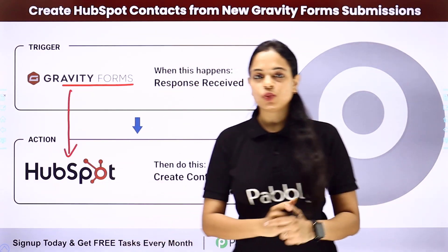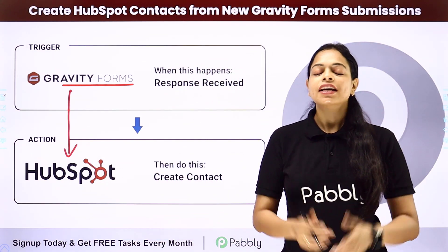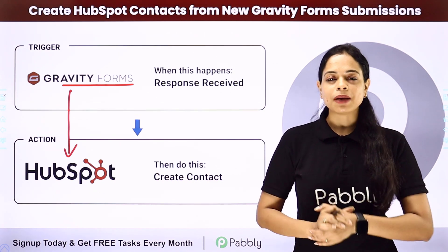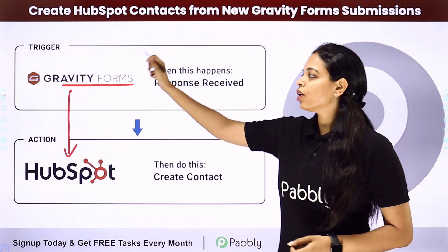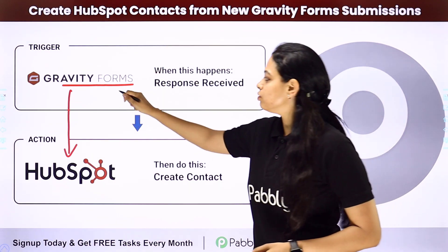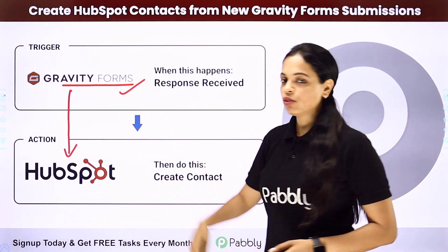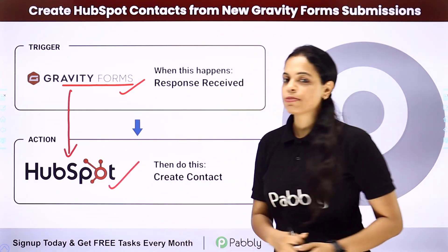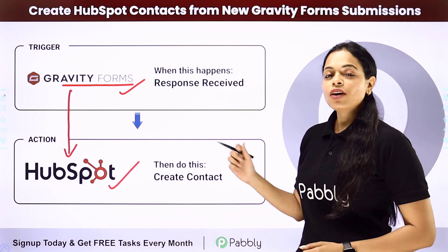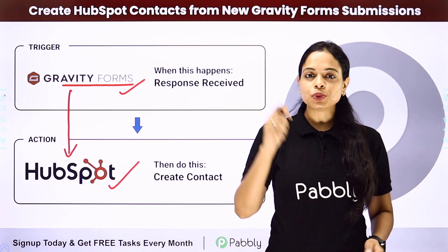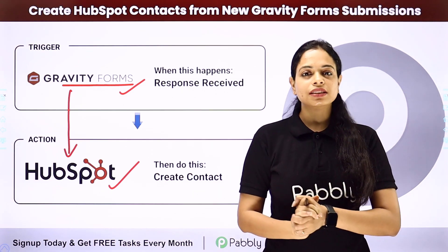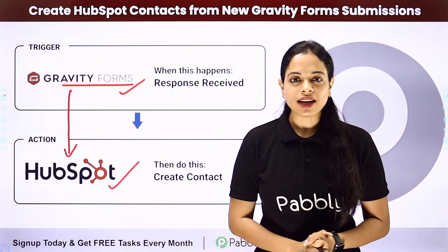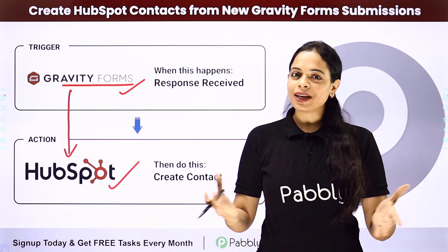For this, you will have to integrate the two applications, and the same thing can be done using Pably Connect software. Your trigger application will be Gravity Forms and your action application will be HubSpot. To understand how you can integrate and automate this entire process yourself, let me take you to my screen.